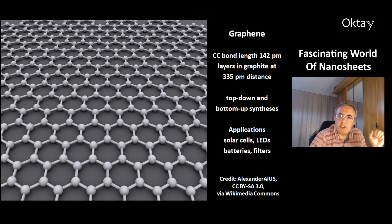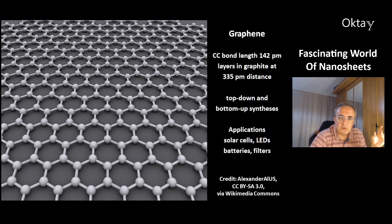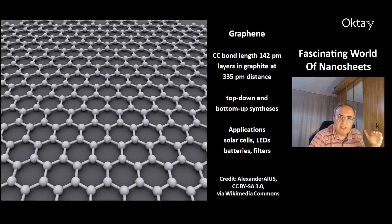This is another picture of graphene — a hexagonal, flat structure. The C-C bond length is 142 picometers. The layers in graphite form a multi-layer structure with a distance of 335 picometers.